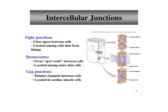In this figure you can study the intercellular junctions: tight junctions, desmosomes, and gap junctions. Tight junctions help to stop leaking, adhering junctions perform cementing in neighboring cells, and gap junctions are a type of tubular channel between cells. Their locations are also different in the animal body.